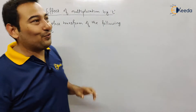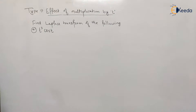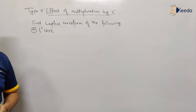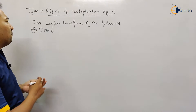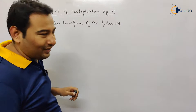The only thing is we need to differentiate it thrice — that is the only challenge. If you are comfortable with the differentiation part, this problem is very simple. Let us begin. Here we have t cubed cos t.